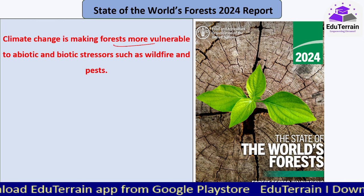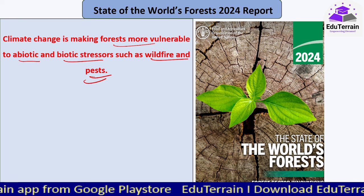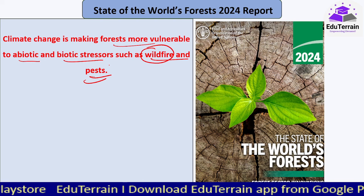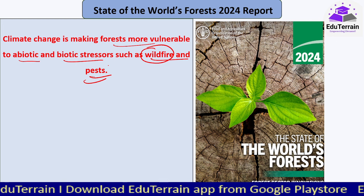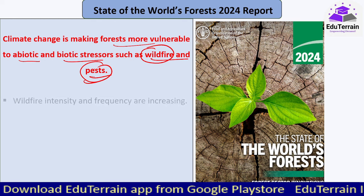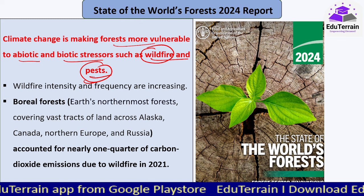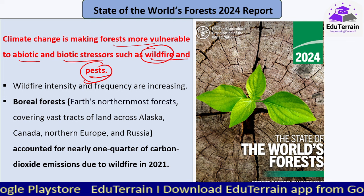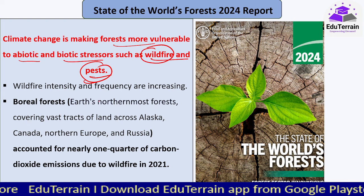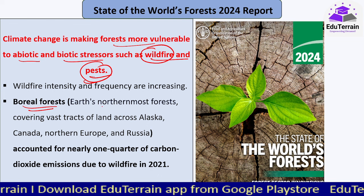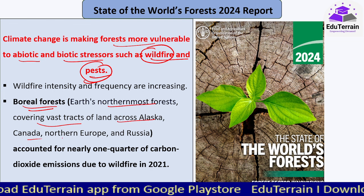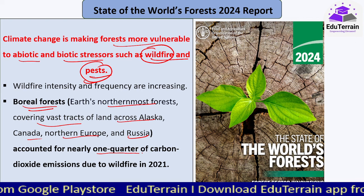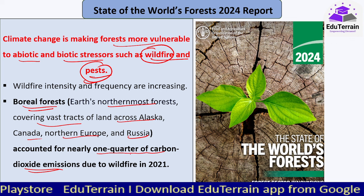Climate change is making forests more vulnerable to abiotic and biotic stresses such as wildfires and pests. Extreme heat causes dry twigs to catch fire, leading to wildfires, as recently seen in Uttarakhand and Odisha. At a global level, boreal forests — the earth's northernmost forests covering vast tracts of Alaska, Canada, northern Europe, and Russia — accounted for nearly one quarter of carbon dioxide emissions due to wildfires in 2021.